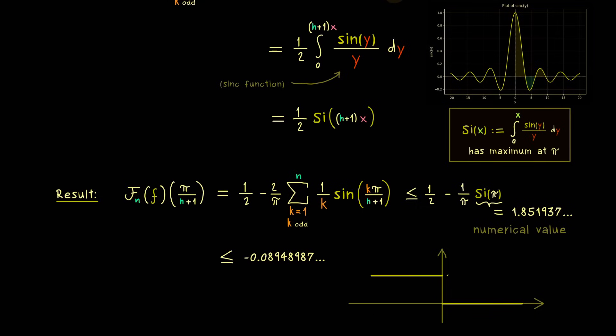For a quick sketch, here we have the value 1 and here the value 0. And now this 8.9% tells us that our Fourier series always has an overshoot of 8.9%. Simply because at this point we are always below this value no matter how large n is.